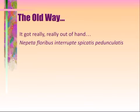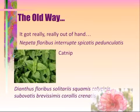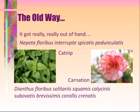Let's look at a few examples of the old way of classifying plants. The names were really long and hard to remember. For example, catnip — the scientific name used to classify that plant was Nepeta floribus enteropitae spicitis pedunculitis. That was a really long one and hard to remember. And carnation is no better; its scientific name was Dianthus floribus solitaris squirmus. We don't use those anymore, thankfully. It's a lot more simple now.